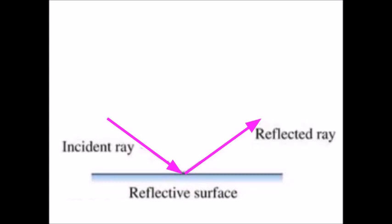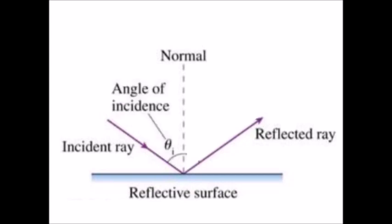We call them the incident ray and the reflected ray, and we measure those rays, the angle of those rays with respect to the normal line, a line perpendicular to and away from the reflective surface. The angle of incident is measured like this, the angle of reflection is measured like this, and they are equal to one another.